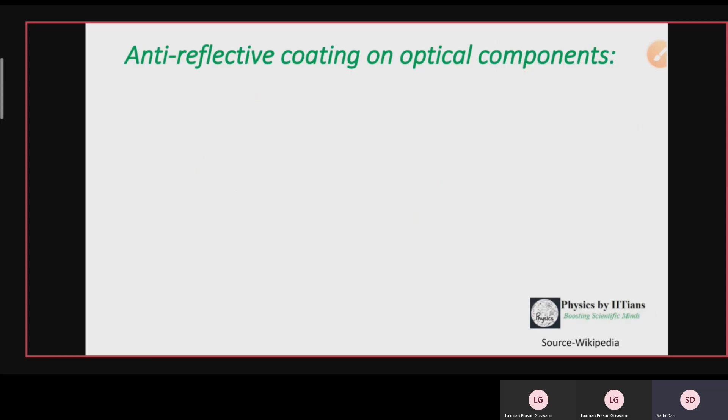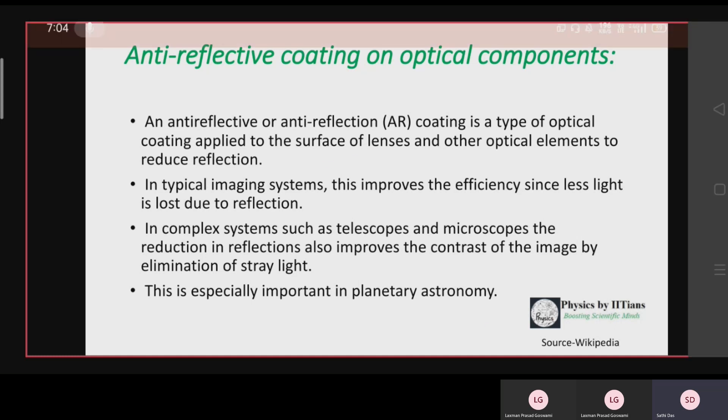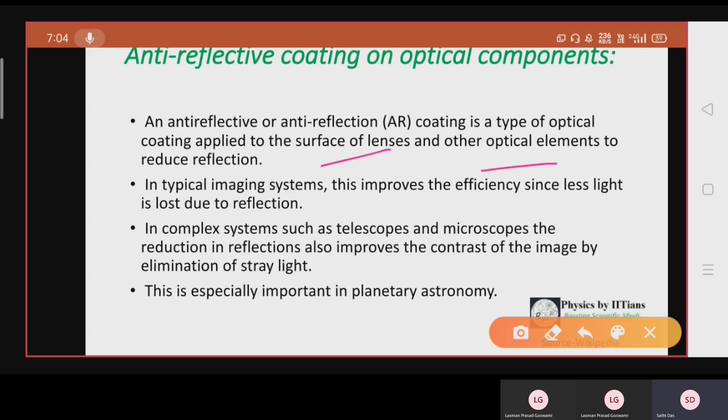To understand what is anti-reflector or what is anti-reflective coating on optical components, we have to understand the definition. The anti-reflecting or anti-reflection coating is a type of optical coating applied on the surface of lenses and other optical elements to reduce reflection.